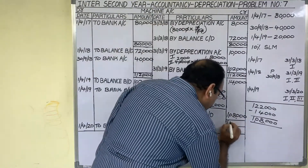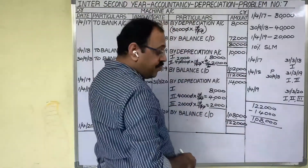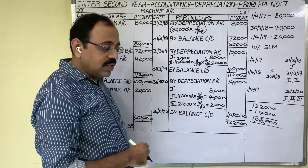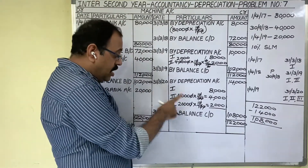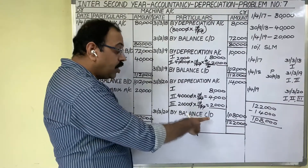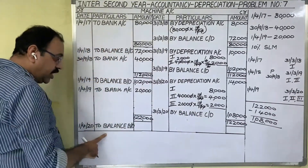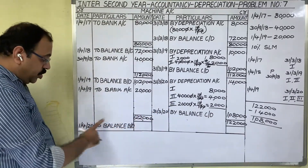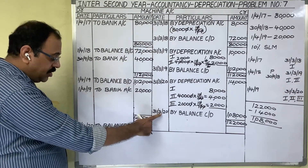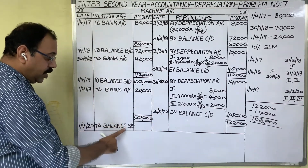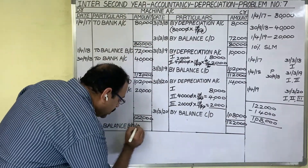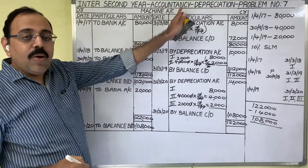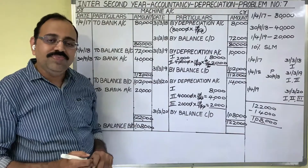For 3 years he asked — up to 2020 — and we have prepared for 3 years. As this account is showing a balance carried down, for the next year we bring the balance forward and leave the problem. The next year starting date is 1st April 2020, balance brought down 1,08,000 rupees. So this is all about the 7th problem from the Depreciation lesson. Hope this video is useful to you. Thank you.